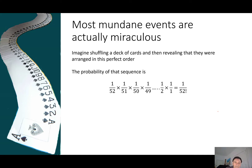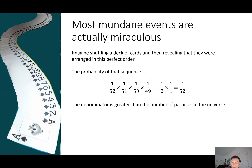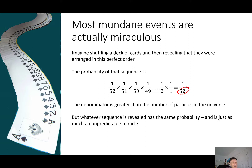The probability of that perfect sequence is 1 over 52 times 1 over 51, and so on all the way through, giving us 1 over 52 factorial. That denominator is a large number — greater than the number of particles in the universe — so the probability of getting that particular sequence is incredibly, unbelievably unlikely. But whatever sequence is revealed has got the same probability, and therefore every sequence you get is just as much an unpredictable miracle as that sequence.